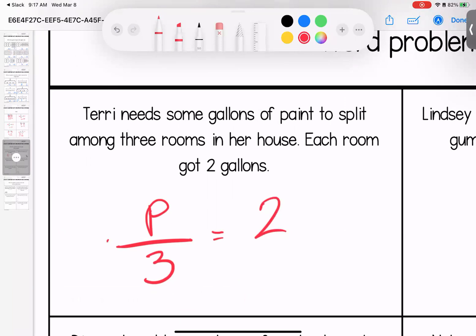And then we can go in and solve this. I can multiply by both sides. P is equal to six gallons.